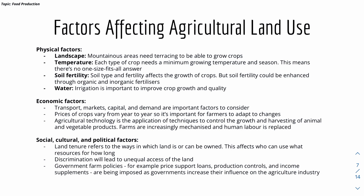Economic factors include transport, market access, capital, and demand. Crop prices may vary year to year due to supply and demand. Agricultural technology — the application of techniques to control growth and harvesting — means farms are increasingly mechanized and human labor is being replaced. Social, cultural, and political factors include land tenure, which affects who can use resources and for how long, discrimination leading to unequal land access, and government farm policies.